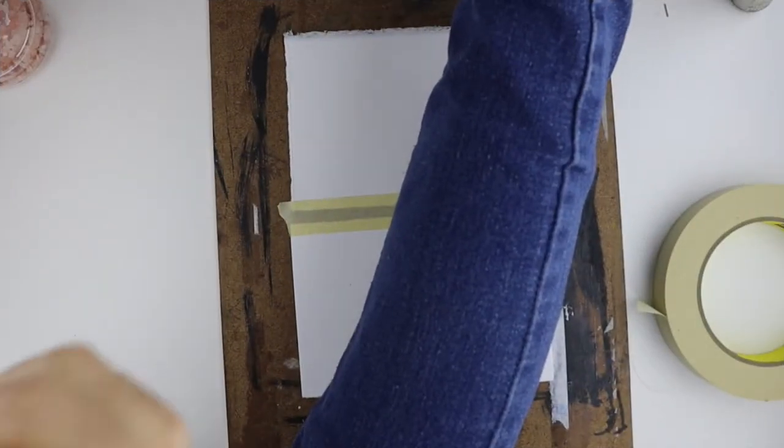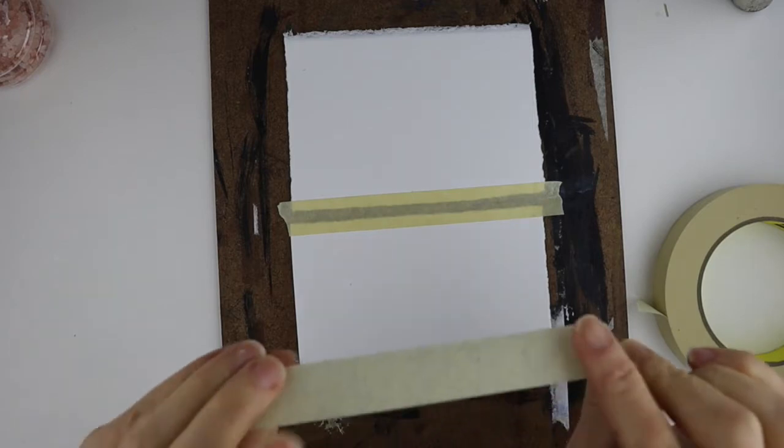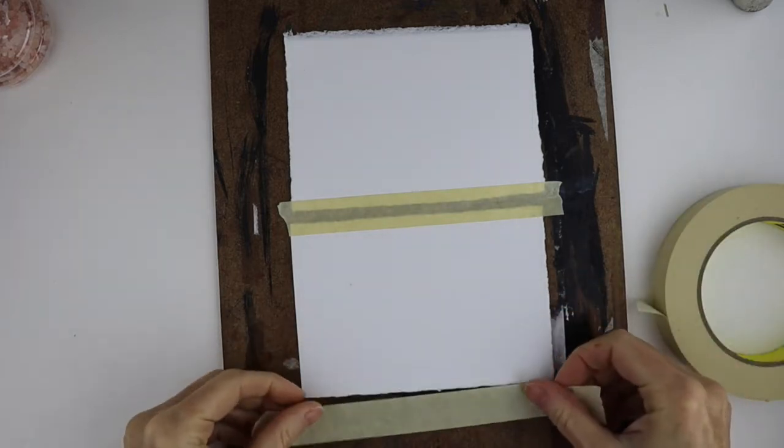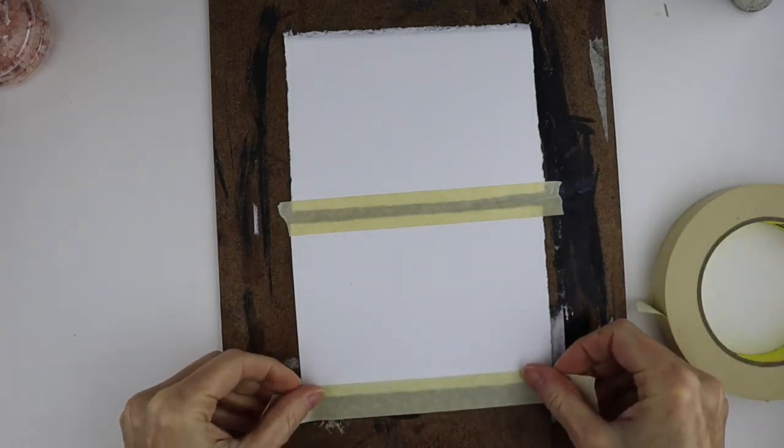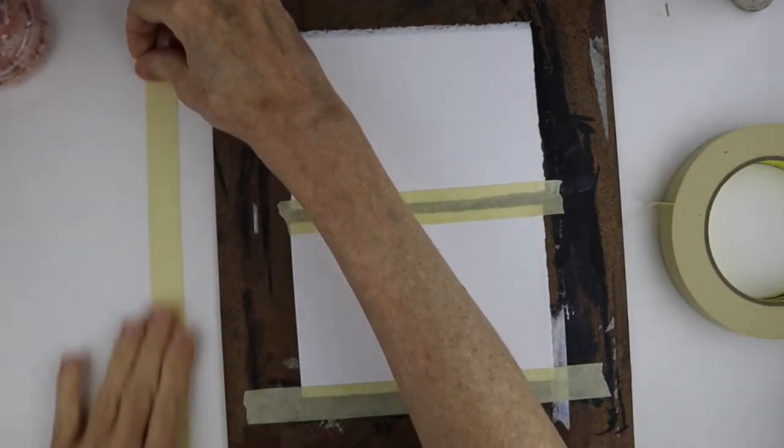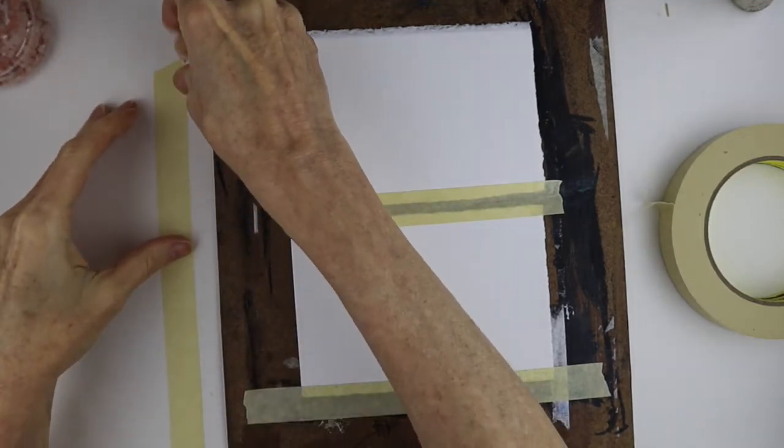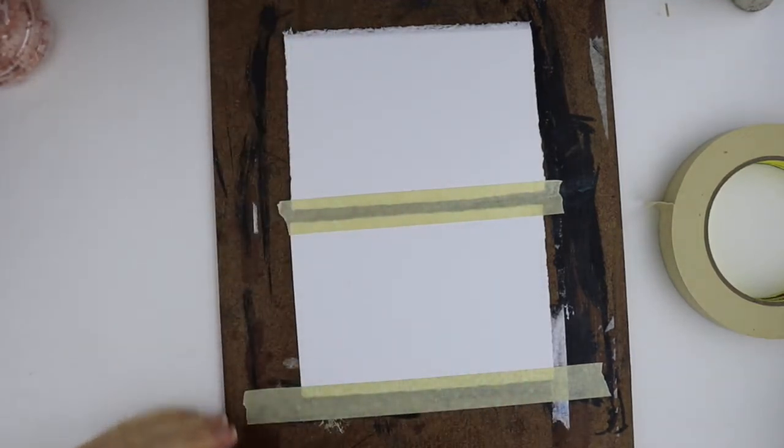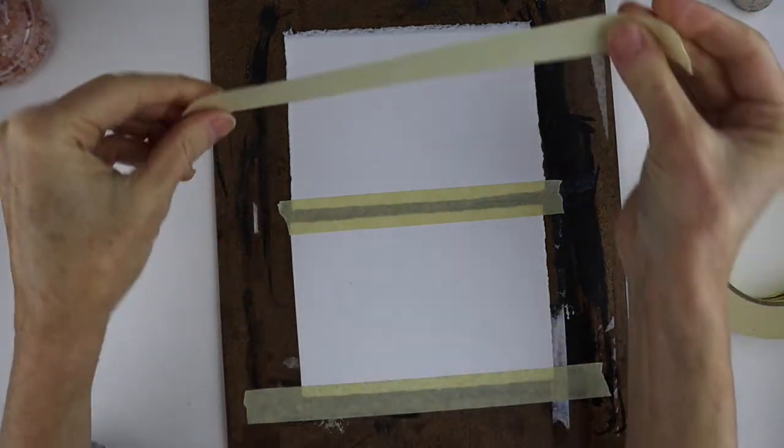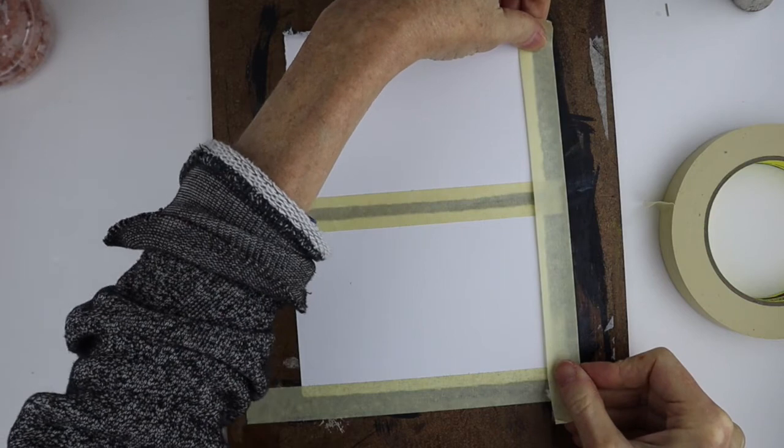If your tape is too sticky, just put it on your jeans and pull it up a few times just to get a little bit of fiber on there so it's not so sticky. That's a little hack. And just put it down here like that. You can also just put your tape like that on a piece of paper or cardstock or bristol board just so it gets a little bit of the sticky part off and then just go ahead and put it on your paper.